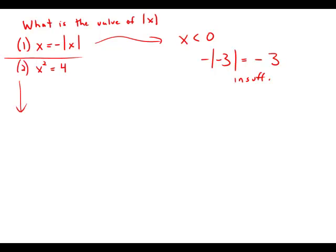Forget statement one — let's look at statement two in isolation. If x squared equals four, what's the value of x? Here we have to be very careful. You might be tempted to take a square root and say x equals two, but whenever you take the square root of a variable you need to include the plus or minus. So x equals plus or minus two. Positive two squared is positive four, and negative two squared is also positive four, so there are two values for x.